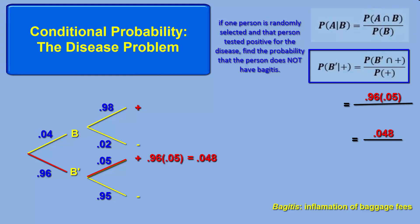The denominator is the overall probability of testing positive. There's two ways to test positive. We just calculated testing positive if a person does not have the disease. We now need to multiply the probability of testing positive when one does have the disease, .98 times .04. Adding both probabilities for testing positive yields an overall .0872 probability of testing positive.